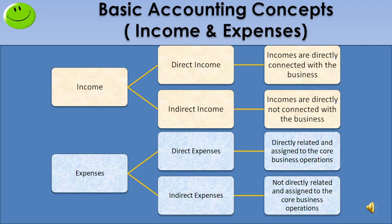For example, in a construction company, selling a flat is the core business. For constructing the flat, it is necessary for them to purchase iron rods, bricks, river sand, etc. — that is directly related to the core business. So spending on purchase of raw material is a direct expense. On the other hand, it is necessary for a company to maintain an office — paying rent, salaries for staff, and mobile charges are all indirect expenses.